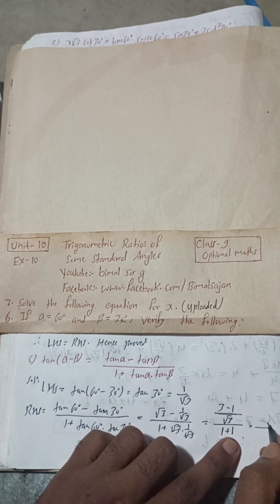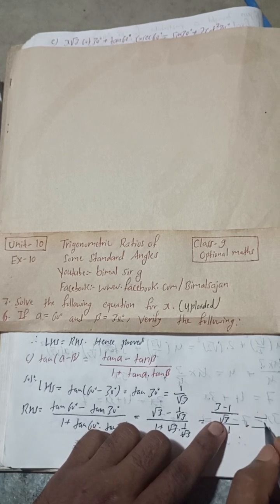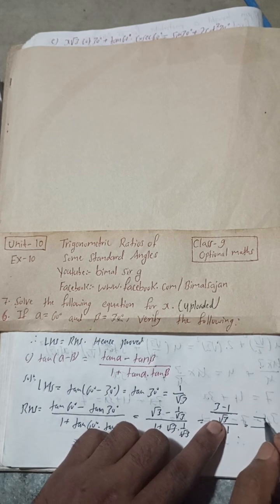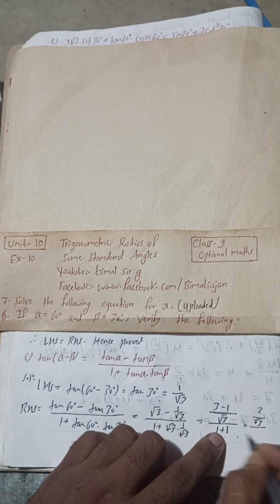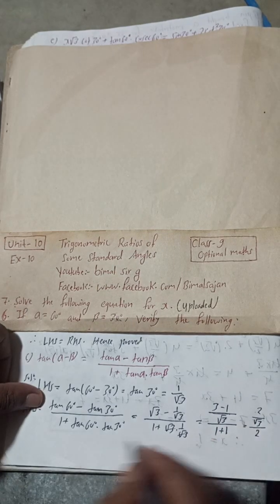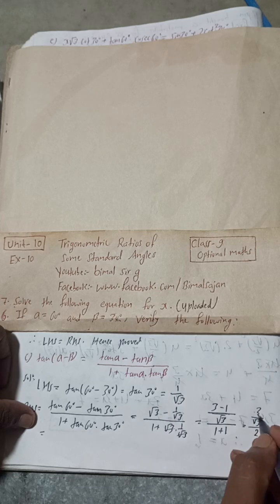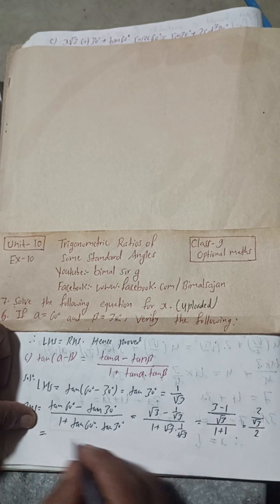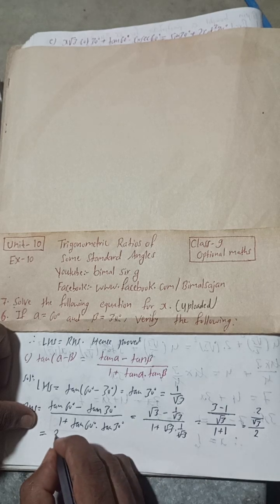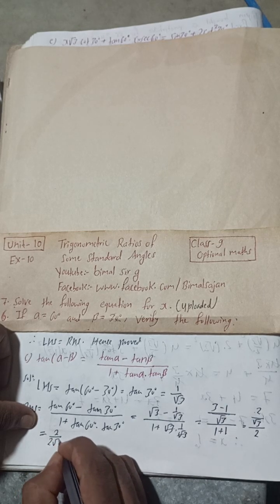So the numerator becomes 2 by root 3 and the denominator is 2. The 2 in numerator and 2 in denominator cancel, giving us 1 by root 3, which equals the LHS. Hence LHS equals RHS, and the identity is verified.